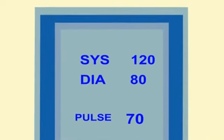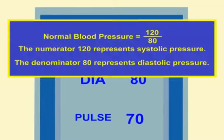It is written in the format 120 by 80. This is the normal blood pressure. The numerator, 120, represents systolic pressure, and the denominator, 80, represents diastolic pressure.